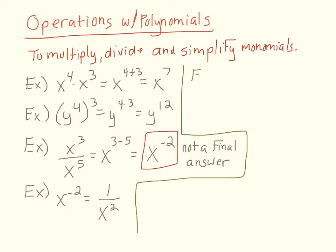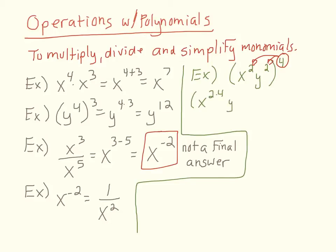Alright, our next example. Let's say we have a product such as x squared y squared, and that's being raised to the 4th. So to simplify this, you take this exponent and distribute it to each of the exponents in your product. So your product becomes x to the 2 times 4, times y raised to the 2 times 4. So your final answer becomes x to the 8th, y to the 8th.